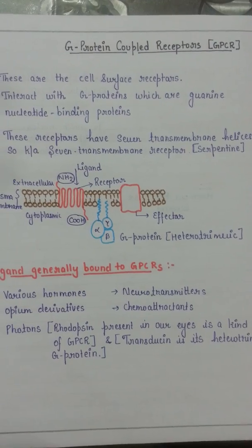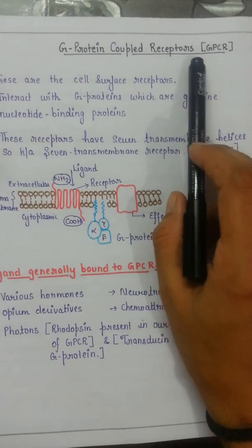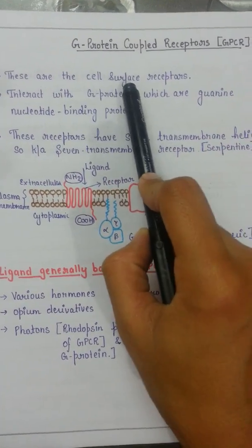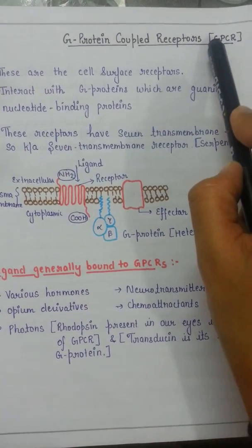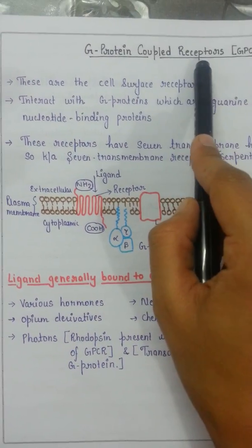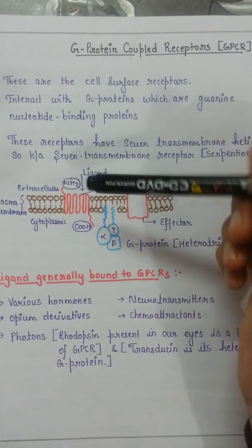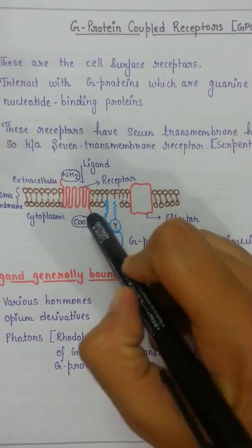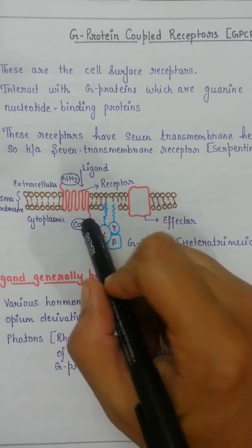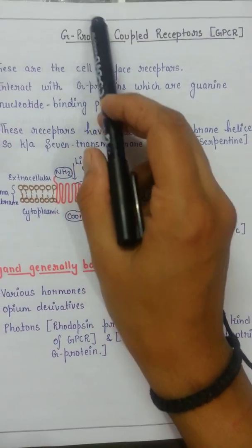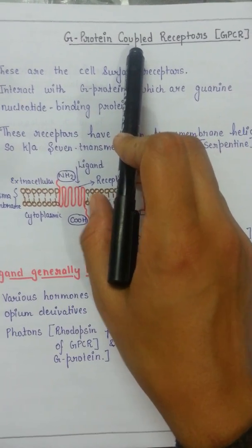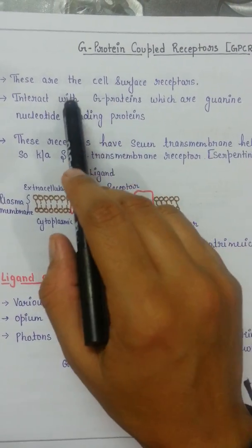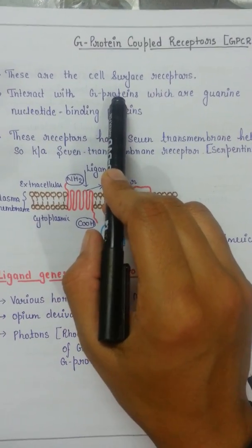The first cell surface receptor I am going to discuss is the G-protein coupled receptor, which we generally call GPCRs. These are cell surface receptors — a particular family of receptors called G-protein coupled receptors. These are transmembrane receptors with two domains: one domain present extracellularly and the other present cytoplasmically.